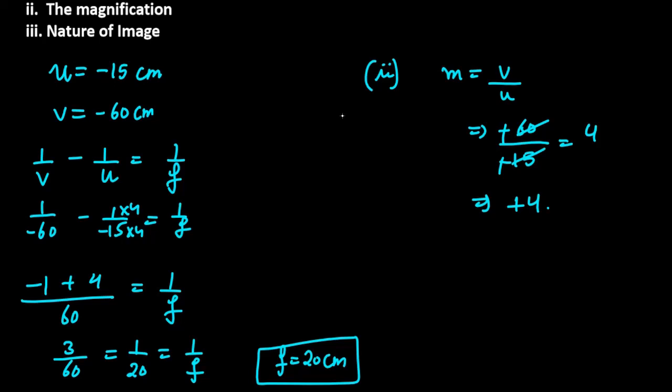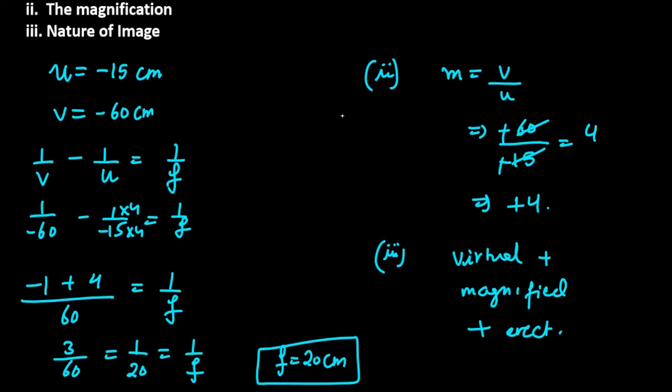Now they've also asked for the nature of the image. Since the image and object are on the same side, the image is virtual. And since magnification is plus 4 — greater than 1 and positive — the image is also erect and magnified.